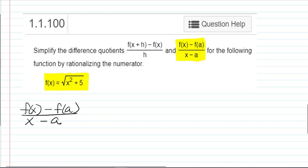So I'm going to plug in x and a to that function to get our numerator. So that's going to be the square root of x squared plus 5 minus the square root of a squared plus 5 over x minus a.